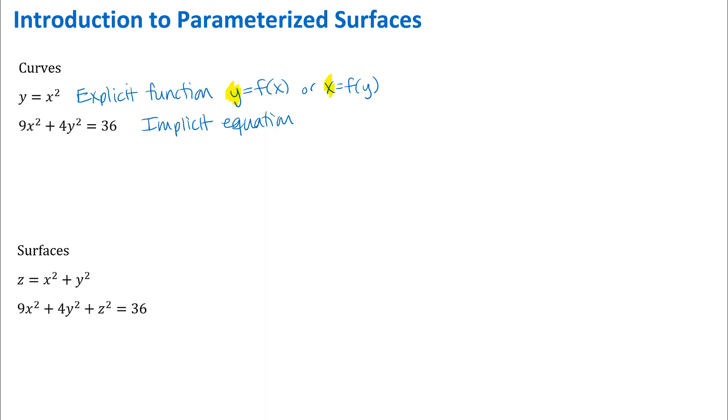We have implicit equations for curves often when we looked at level curves for functions of two variables that we often have them in this form where we had f of xy equals some constant. So those are implicit equations for curves and those are useful in lots of other contexts where maybe we can't write an explicit function.